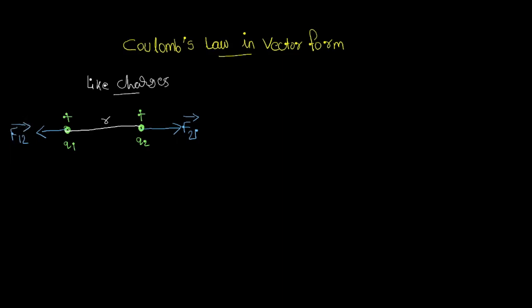These are the two repulsive forces. The distance from Q1 to Q2 is R12, in this direction. The distance from Q2 to Q1 is R21, in this direction. Next, we are going to express F12 in vector form.